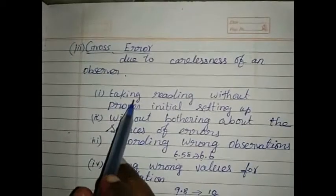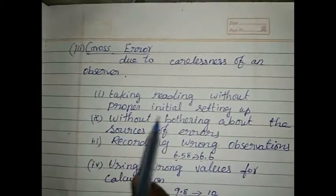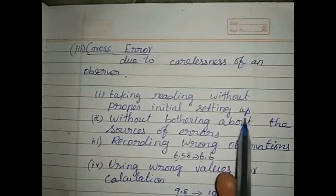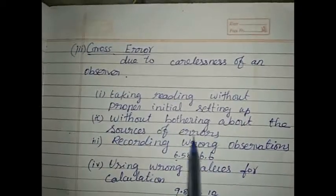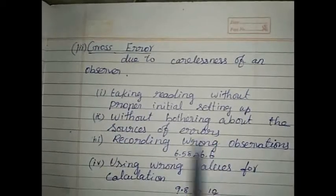First one is, taking reading without proper initial setting up of an experiment. Second one is, without bothering about sources of errors. Third one is, recording wrong observations.